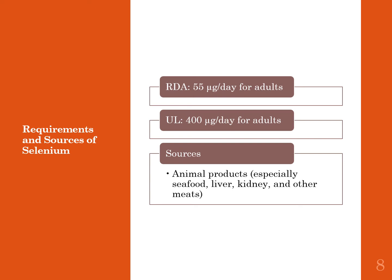The requirement for selenium is 55 micrograms per day for adults, and the tolerable upper intake level is 400 micrograms per day. Life stage breakdowns are in Table 10.3 on page 179. Typical intake in the United States is between 60 and 220 micrograms per day, putting most people right in the appropriate range. Selenium is found in animal products, especially seafood, liver, kidney, and other meats.